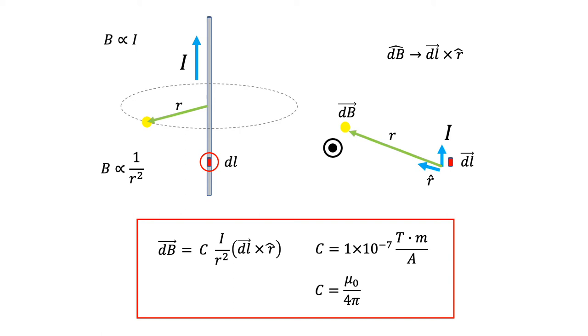This equation here is what we call the Biot-Savart's law. It completely gives us the magnetic field produced by a current element DL, whose magnitude is directly proportional to current, inversely proportional to R squared, and whose direction is determined by the vector cross product DL cross R hat.